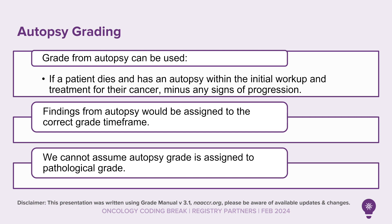Grade from autopsy can be used if a patient dies and has an autopsy within the initial workup and treatment for their cancer, minus any signs of progression. We cannot assume autopsy grade is assigned to the pathological grade. We assign the findings from the autopsy based on the appropriate time frame.